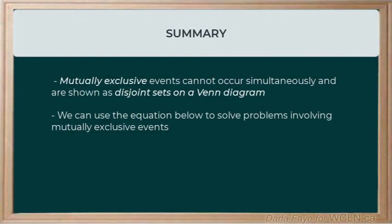To summarize, in this video, we've first discussed what it means for events to be mutually exclusive. Then, we looked at these mutually exclusive events on a Venn diagram, where they are represented in two disjoint sets. And finally, we used a new equation to determine the probability of two mutually exclusive events.